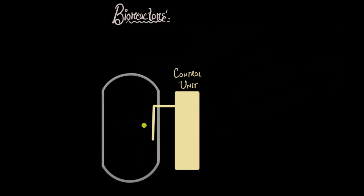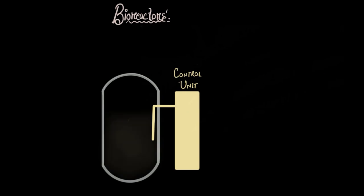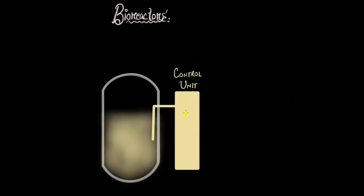Now that we have a big vessel for bacterial growth, let's put in some food for bacteria — nutrients on which they can feed and thrive. The first thing we put into our bioreactor is nutrients. These contain water, a readily usable energy source like glucose, phosphorus, carbon, and amino acids — basically everything that cells require for proper functioning.